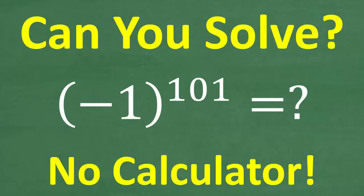The key to doing this problem is having absolute certainty in your answer and doing this in the most direct, efficient path. There are a couple of different ways we can approach this problem. So negative 1 to the 101st power — what does that equal? Put your answer into the comment section.